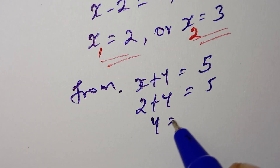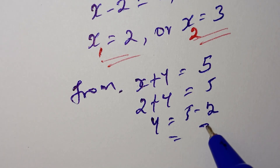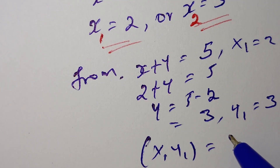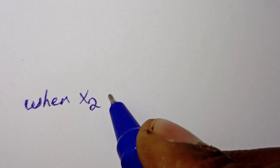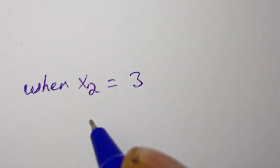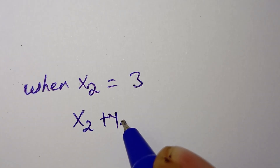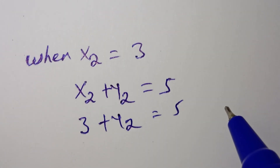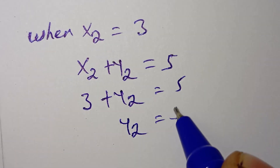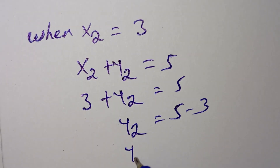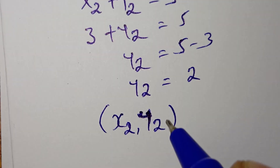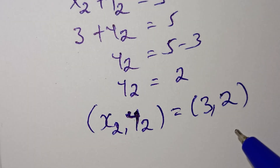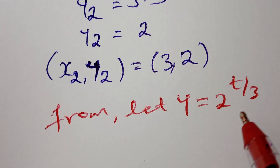From x plus y equals 5: when x equals 2, y equals 3 (giving solution pair x1, y1 = 2, 3); and when x equals 3, y equals 2 (giving solution pair x2, y2 = 3, 2).